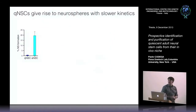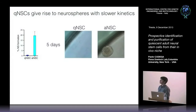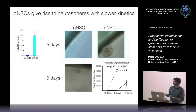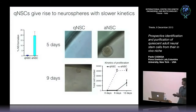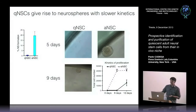In the neurosphere assay, similar results were seen: activated neural stem cells were more enriched in neurosphere formation compared to quiescent neural stem cells. We also noticed that activated neural stem cells divided more rapidly than the quiescent population, which showed a delay in growth. Quantification confirmed a shift in growth kinetics, suggesting that quiescent neural stem cells must overcome some step in order to begin dividing.